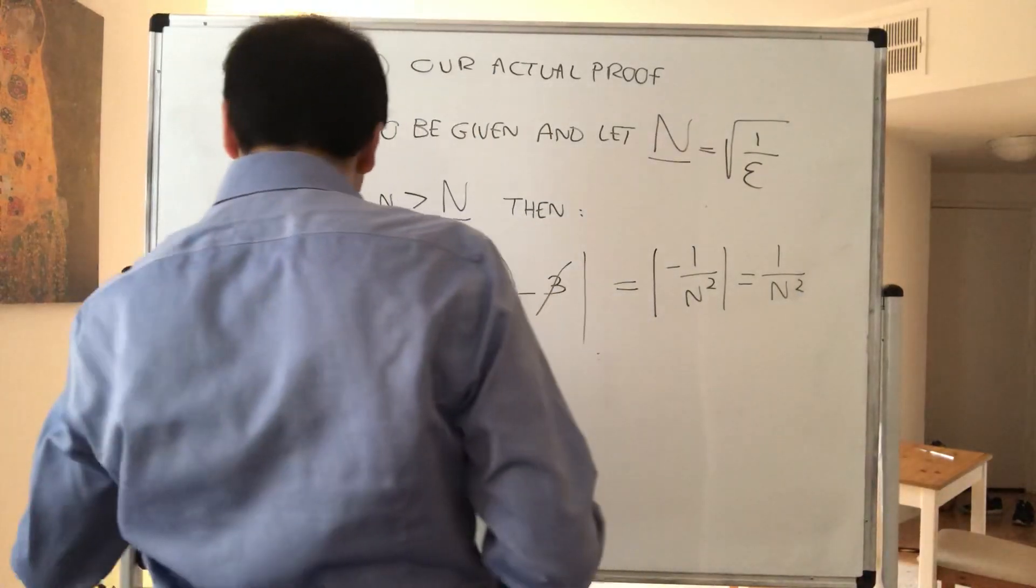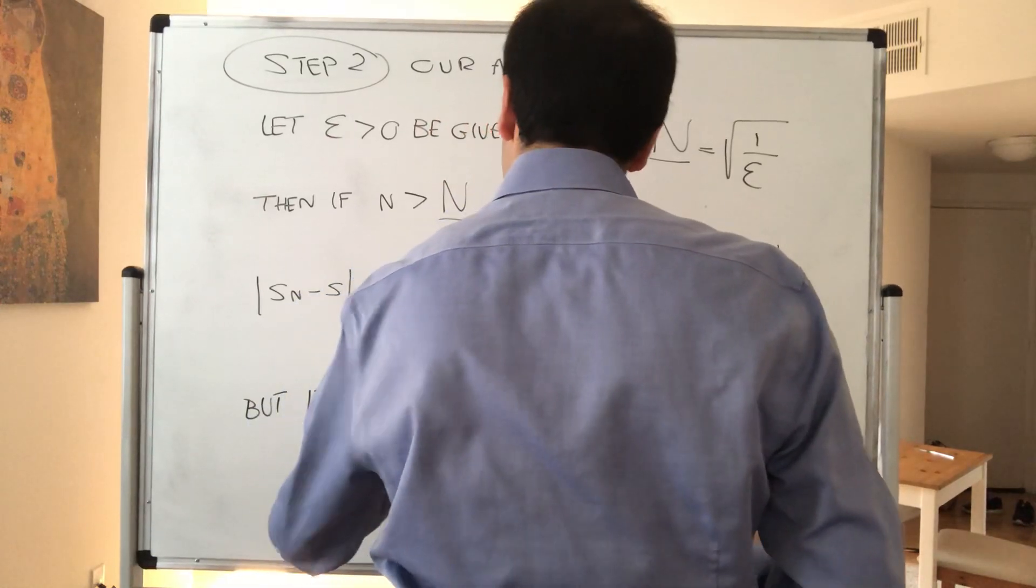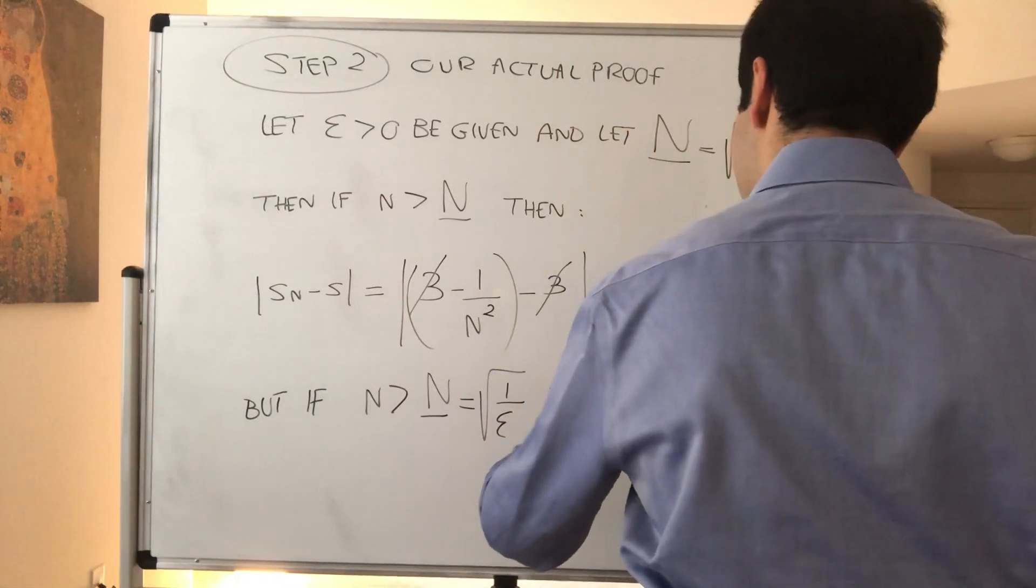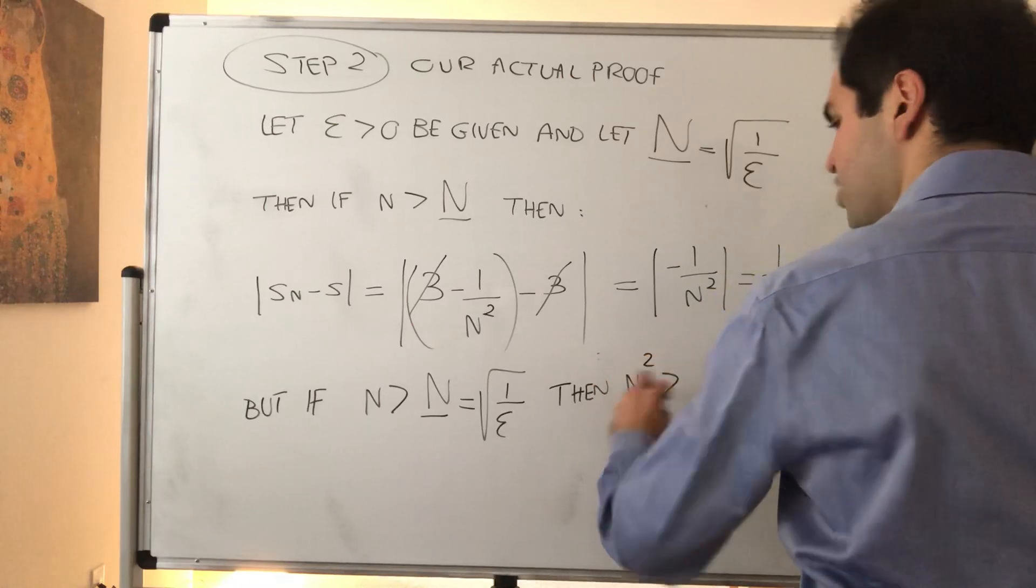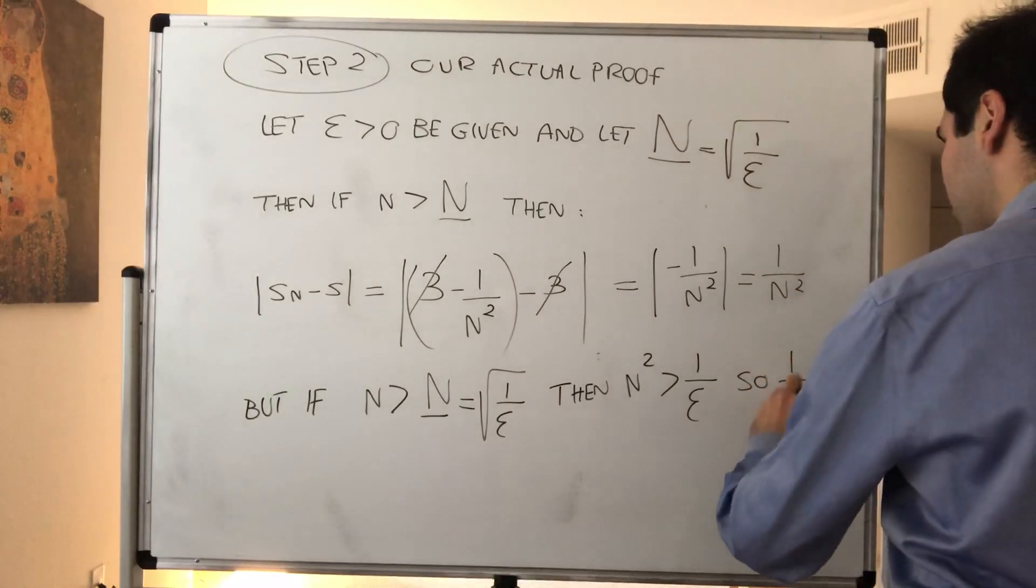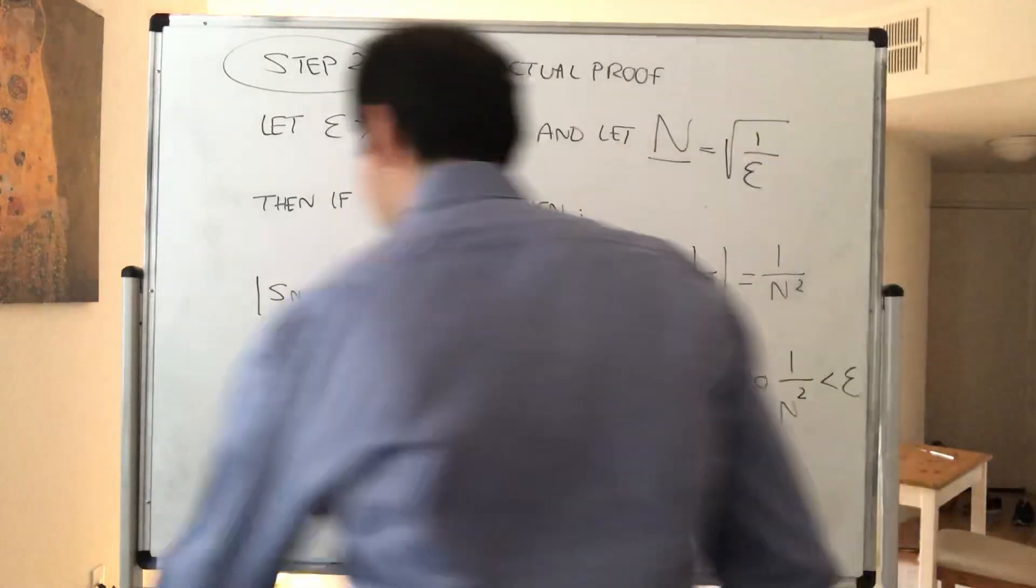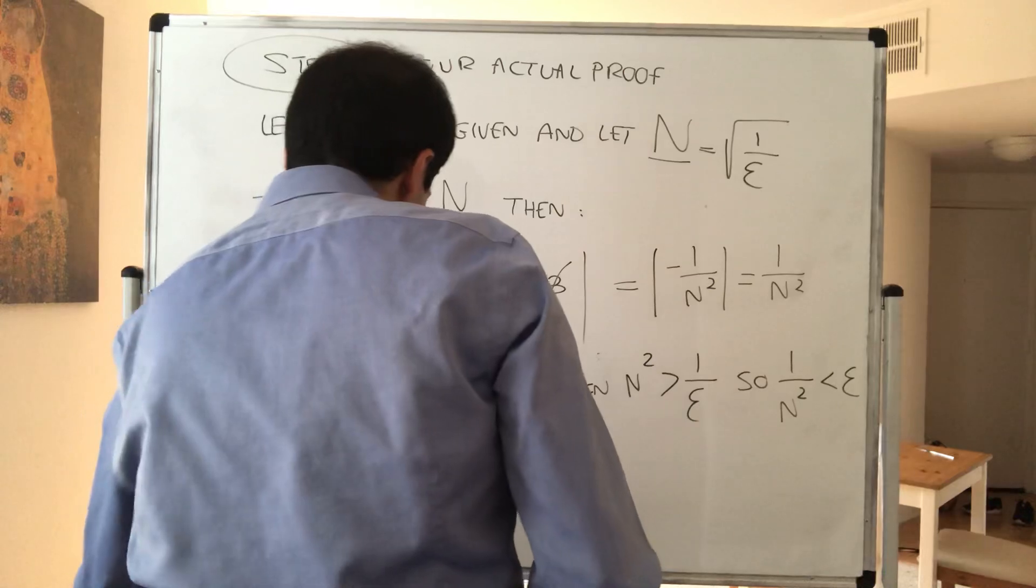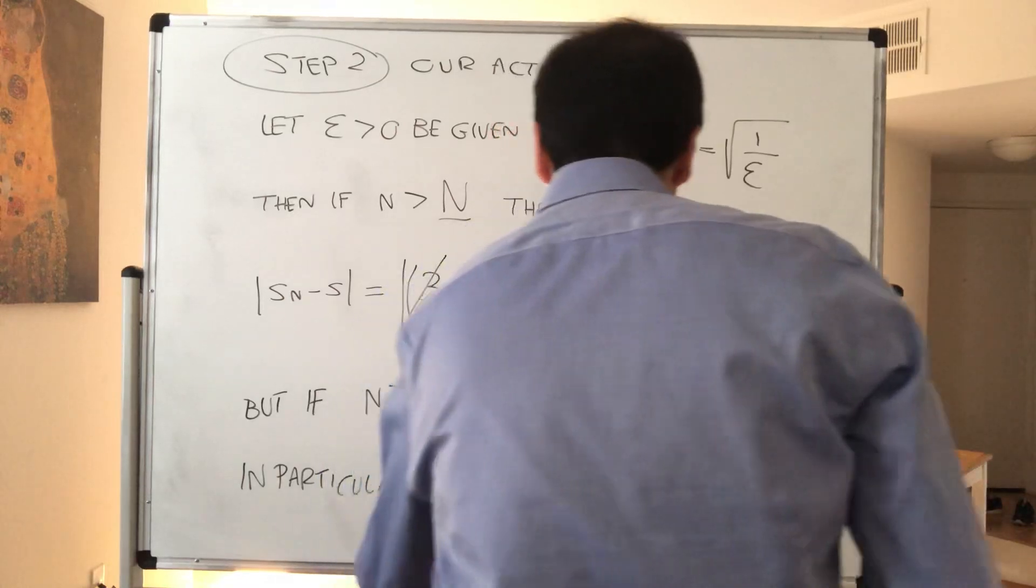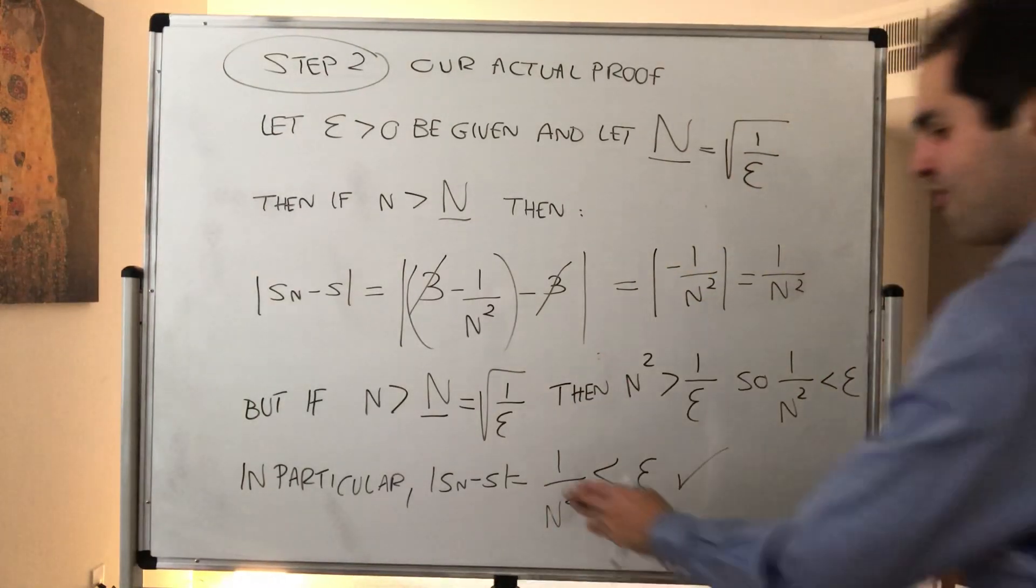But notice, if n is greater than capital N, which is square root of 1 over epsilon, then n squared is greater than this squared, so 1 over epsilon. So 1 over N squared is less than epsilon. So in particular, absolute value of SN minus S, which is 1 over N squared, becomes less than epsilon. And therefore, we are done.